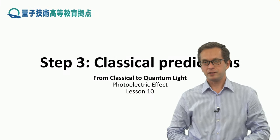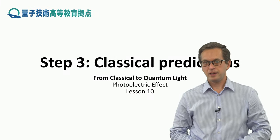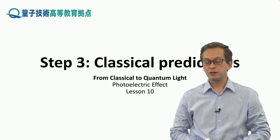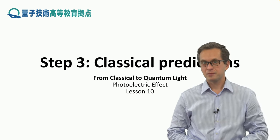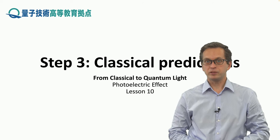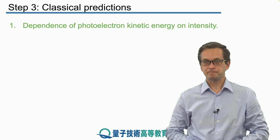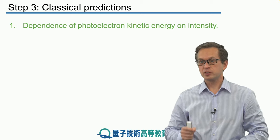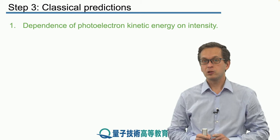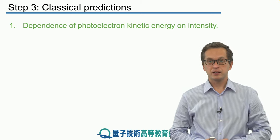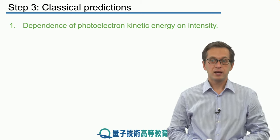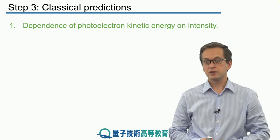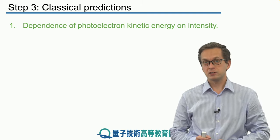Step three: classical predictions. In this step, we will look at what the classical theory of electromagnetism predicts about the outcomes of the photoelectric experiment. We will look at each observation one by one and examine what the classical theory tells us we should expect, and investigate whether it agrees with the observations of the experiment.